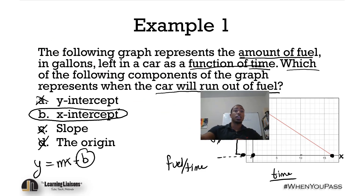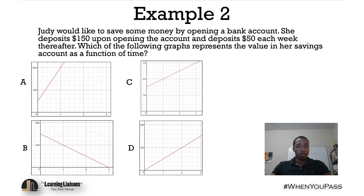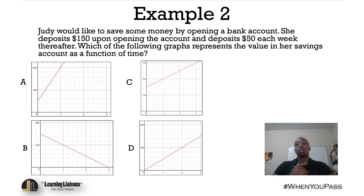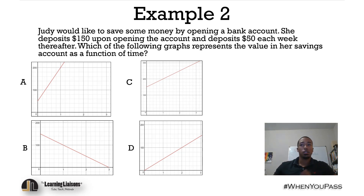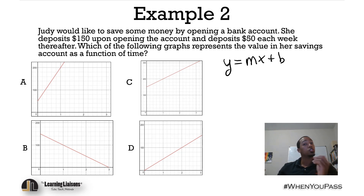Now here's example two. Judy would like to save money by opening a bank account. She deposits $150 upon opening the account and then deposits $50 each week thereafter. Which of the following graphs represents the value in her savings account as a function of time? This is a linear function, so we're working with Y = MX + B, the slope-intercept form.